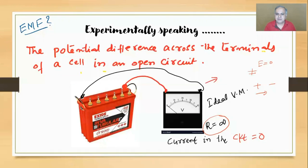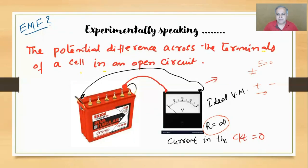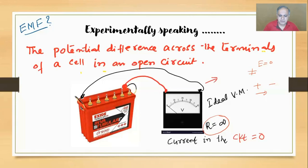When you don't connect an external circuit - that is, when you don't connect a bulb across the battery - the energy stored inside the cell won't start being spent. So when zero current is flowing, you're actually measuring the true potential difference formed as a result of the chemical reactions. That's what you mean by the potential difference across the terminals of a cell in an open circuit, and that is called EMF.